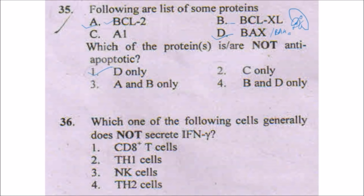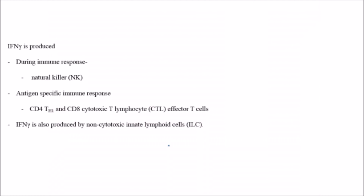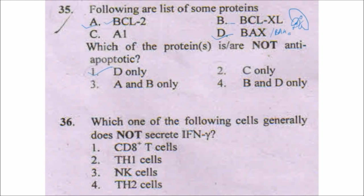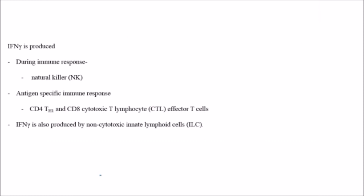Which type of cell generally does not secrete IFN-gamma? The answer is T helper cell 2 (Th2) cells. During the immune response, natural killer cells secrete IFN-gamma, and during the antigen-specific immune response, CD4 T helper cells and CD8 cytotoxic T lymphocytes (effector T cells) secrete IFN-gamma. IFN-gamma is also produced by non-cytotoxic innate lymphocytes.